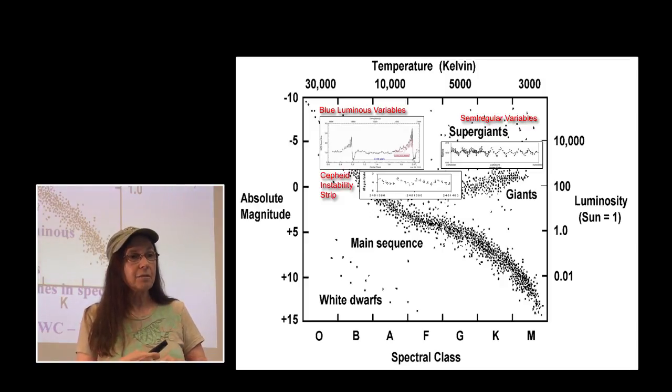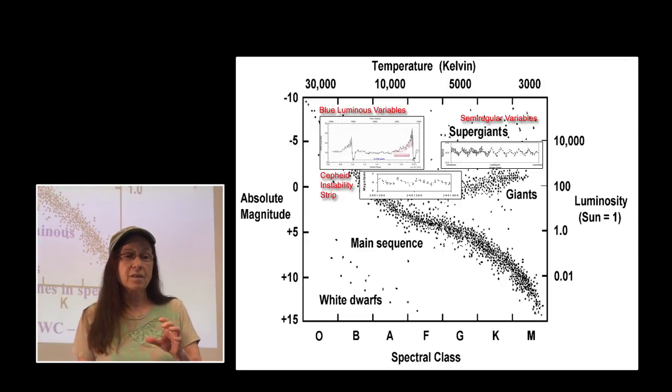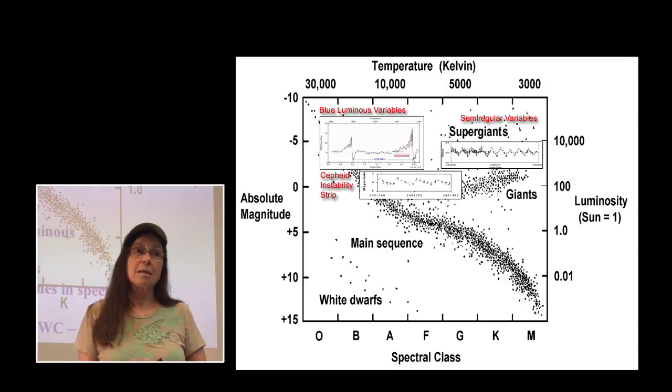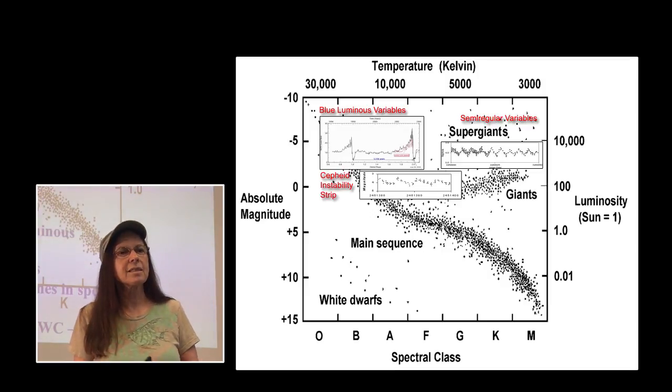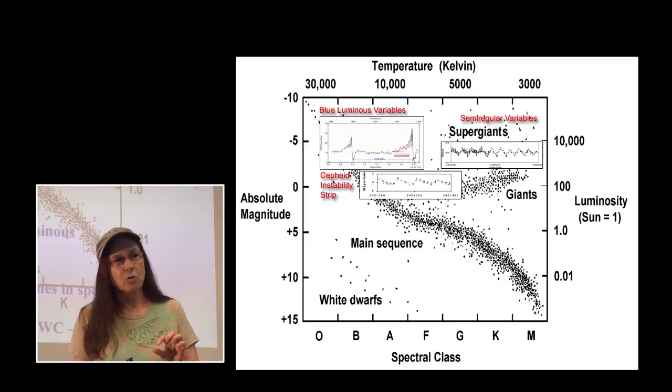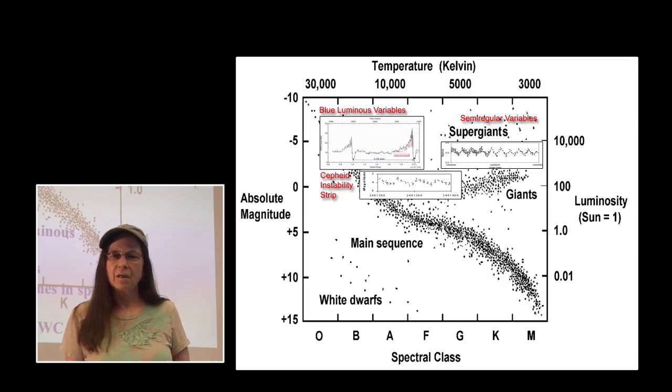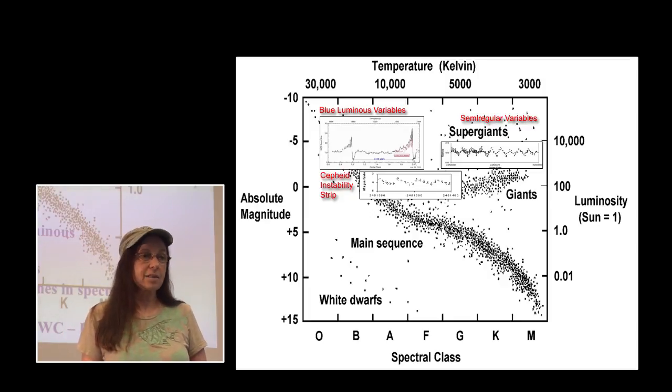But you will also find, because that's what defines a Wolf-Rayet star, those broad emission lines in nitrogen or carbon, sometimes oxygen and neon, sometimes those little stellar cores in the center of planetary nebulas, sometimes they have very strong winds, blow that hydrogen envelope away, and you get that same spectra. So about 15% of the stellar cores within planetary nebula, which you expect to go towards the white dwarf, and they do.